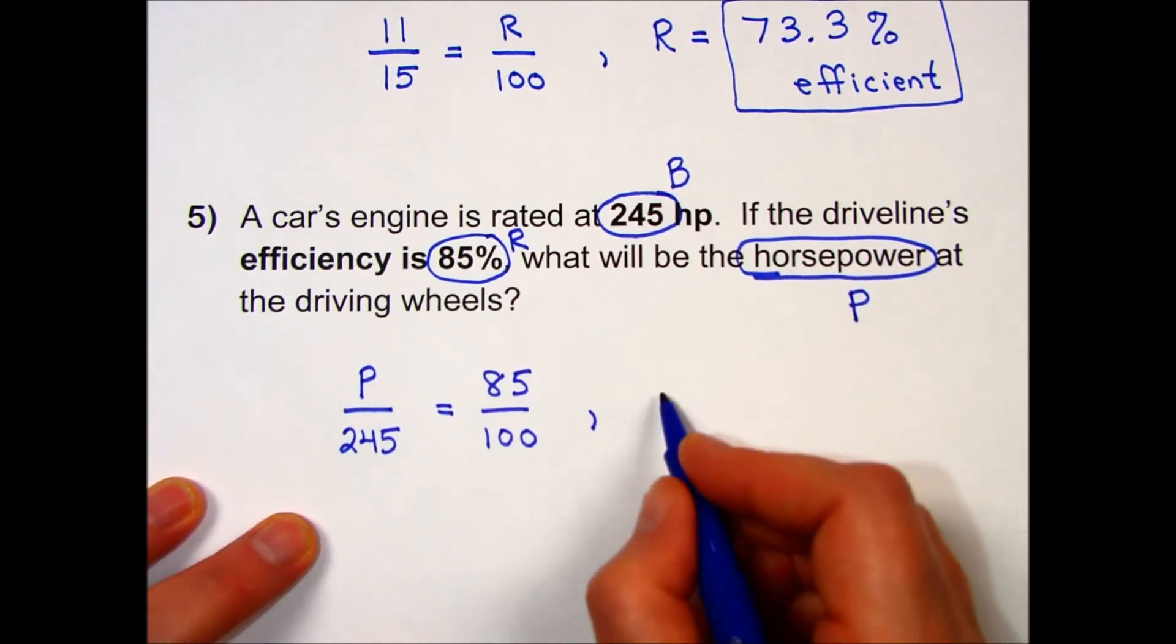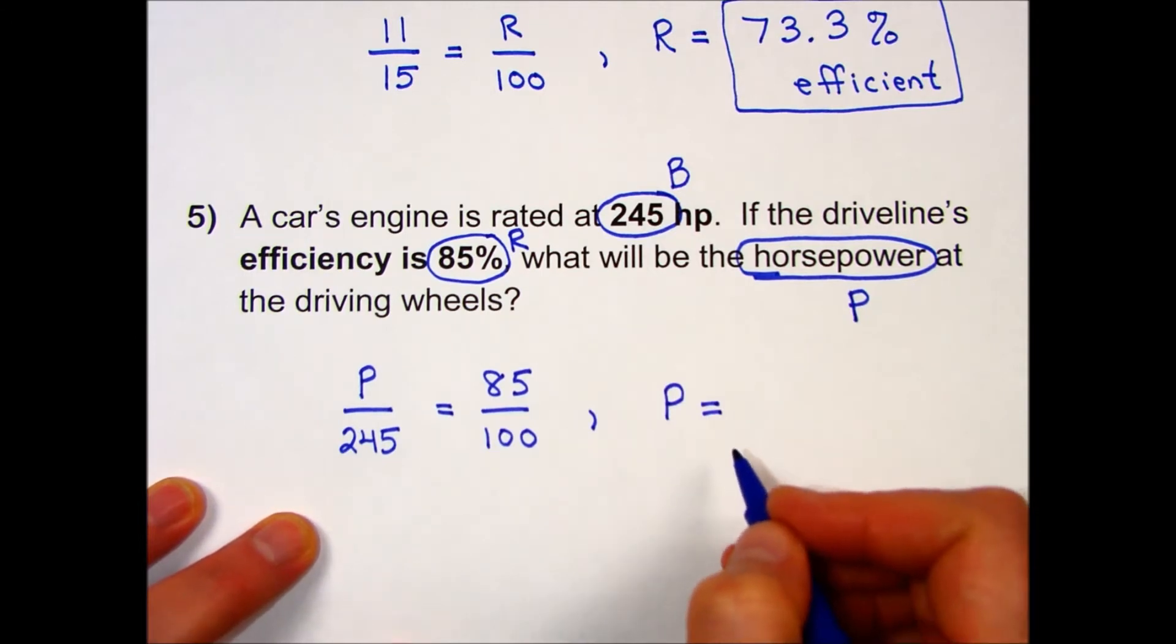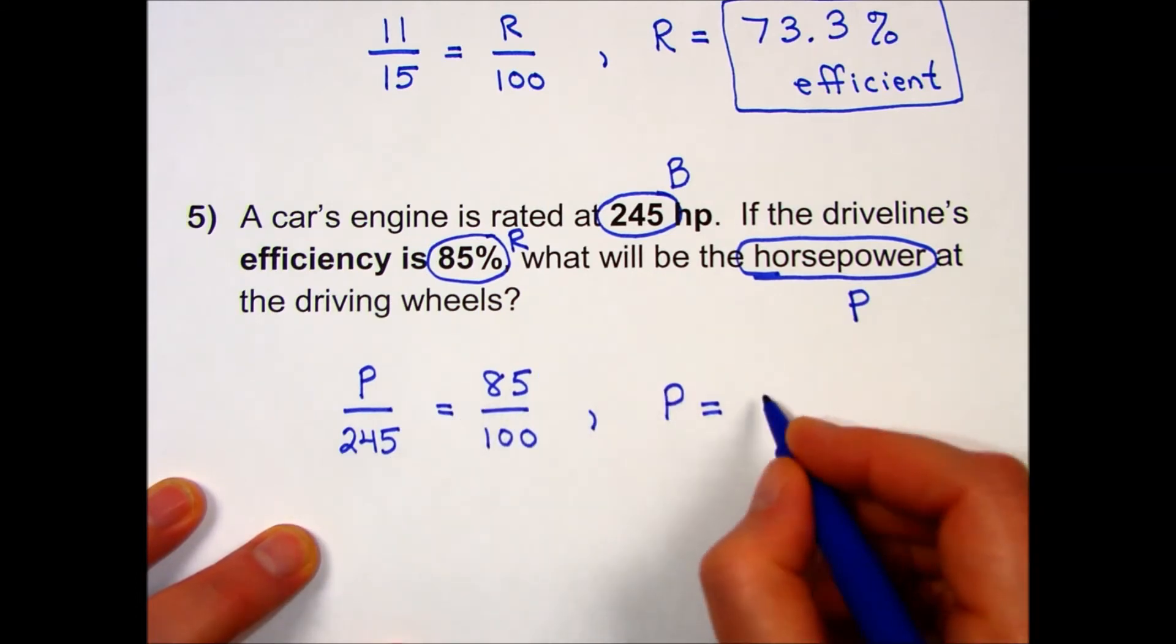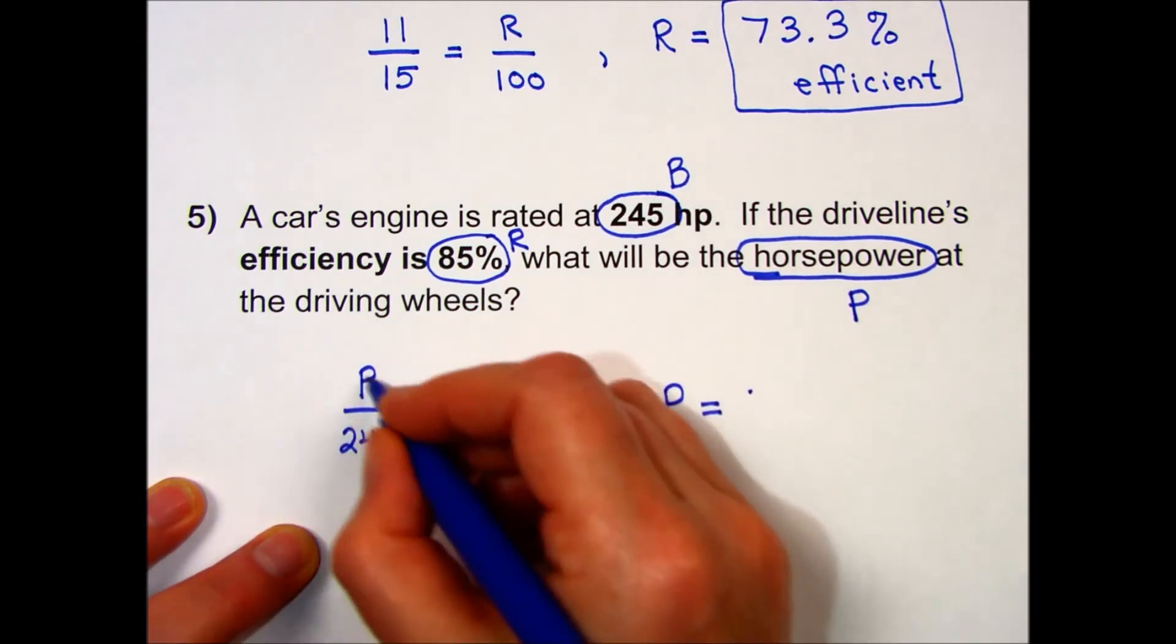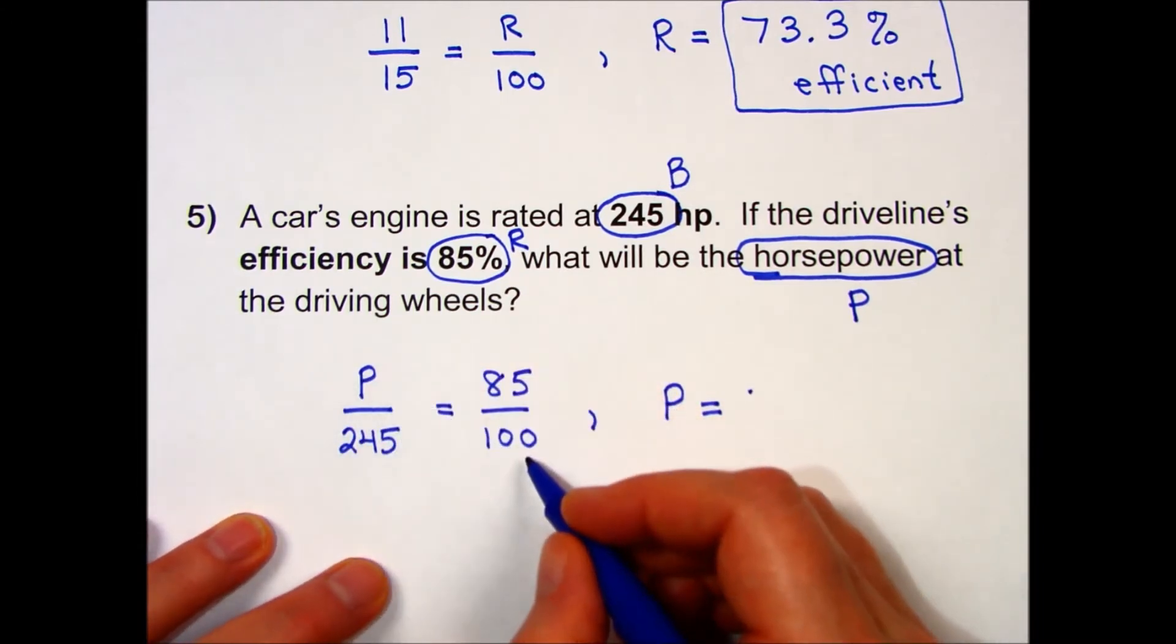To find this part, I cross-multiply using my calculator. Find the diagonal that has two numbers on it and multiply 245 times 85, and then divide by the number on the diagonal with my unknown, which would be 100.